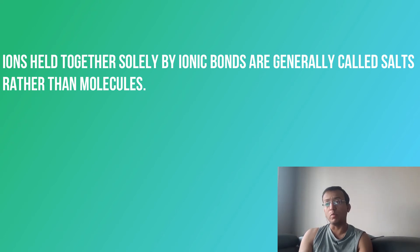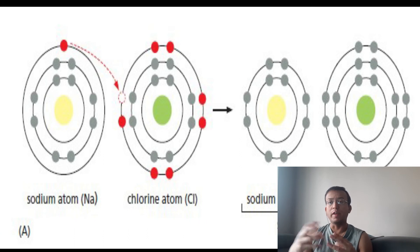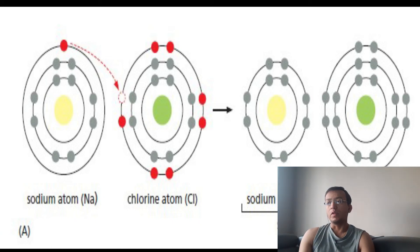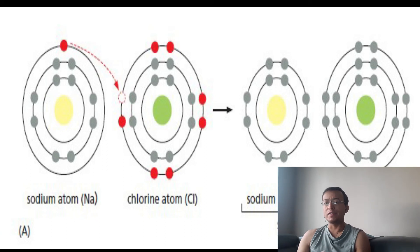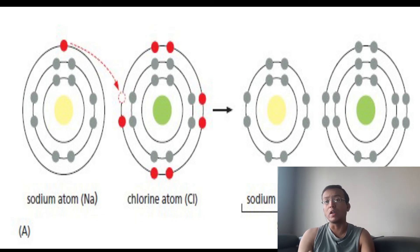Ions held together solely by ionic bonds are generally called salts rather than molecules — molecules are what we call atoms joined by covalent bonds. Because of favorable interactions between the ions and polar water molecules, many salts including NaCl are highly soluble in water. When dissolved in water, salts dissociate into individual ions: positive ions are called cations, and negative ions are called anions.